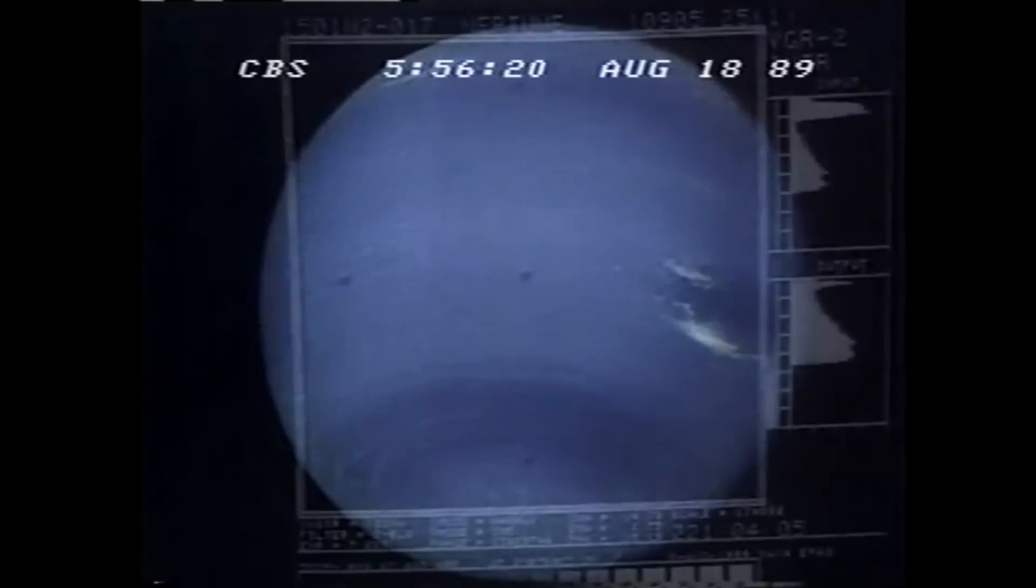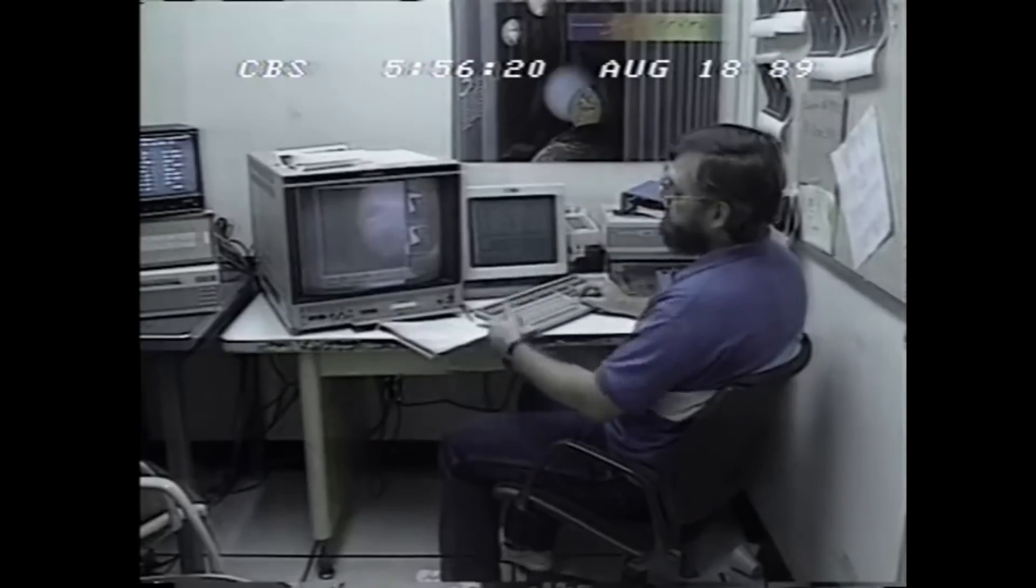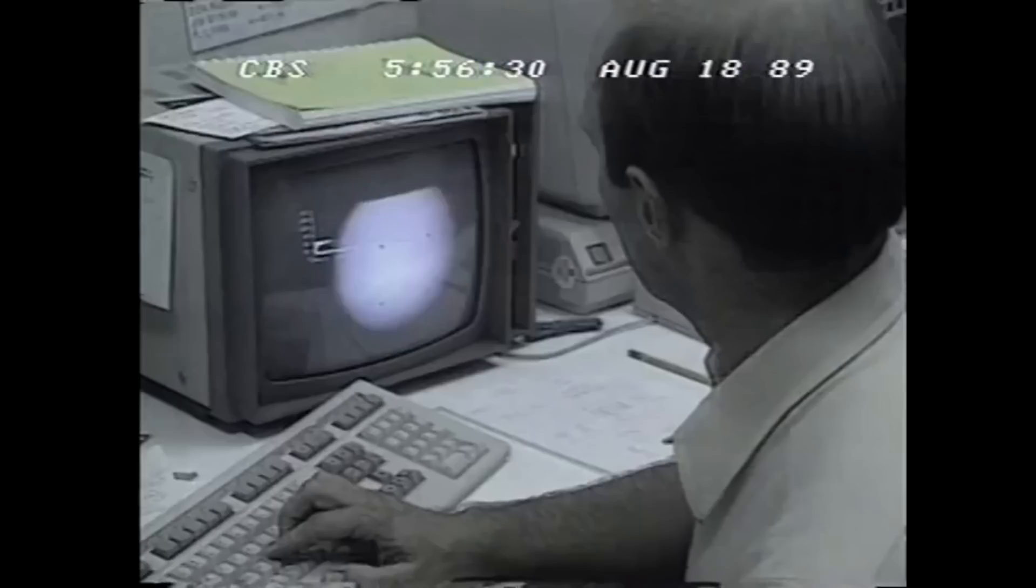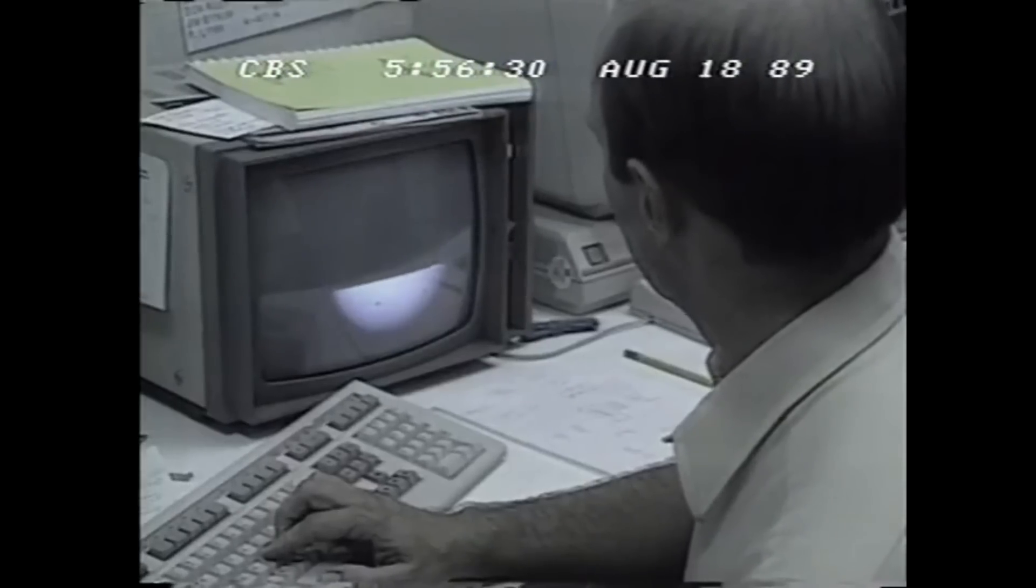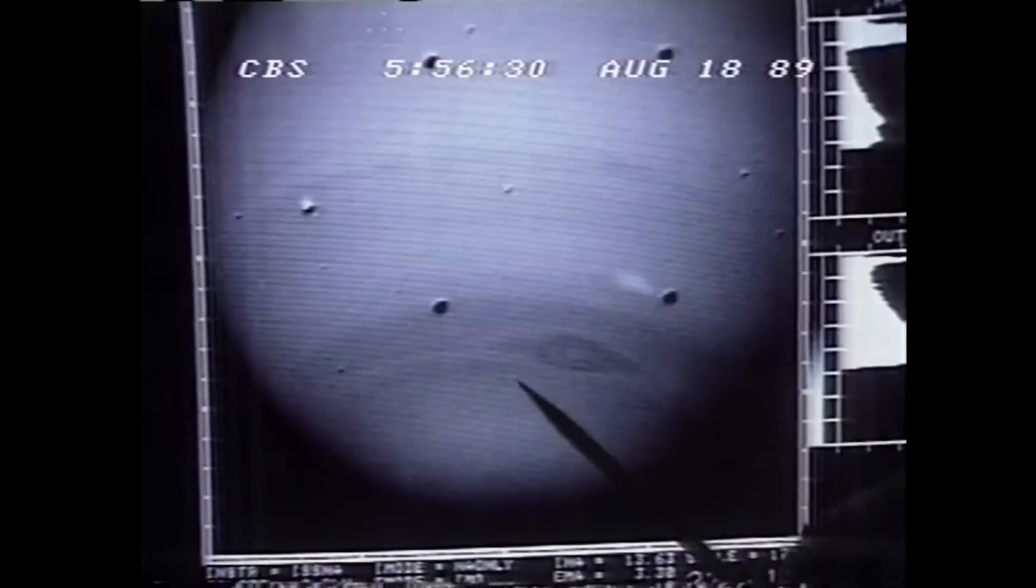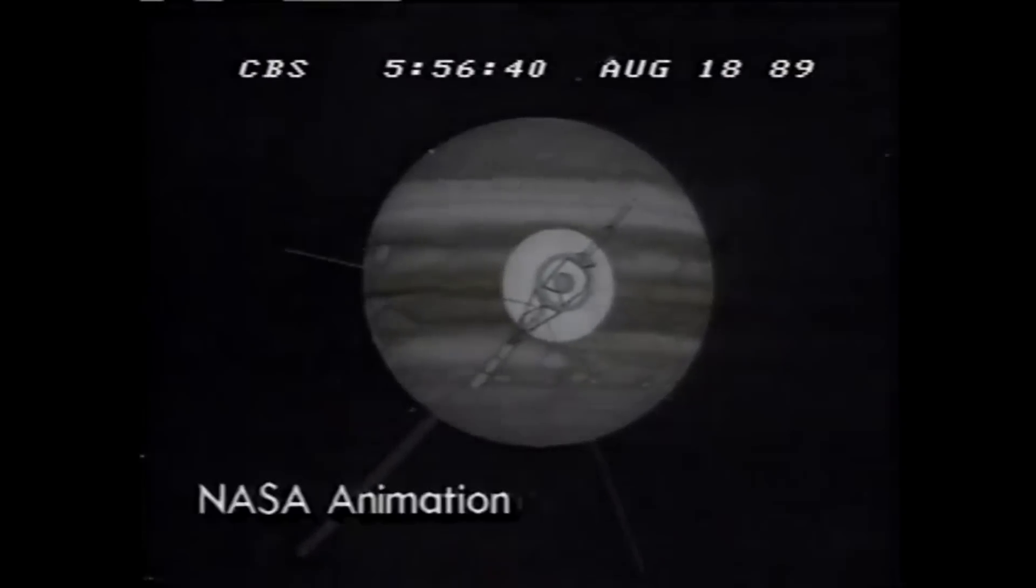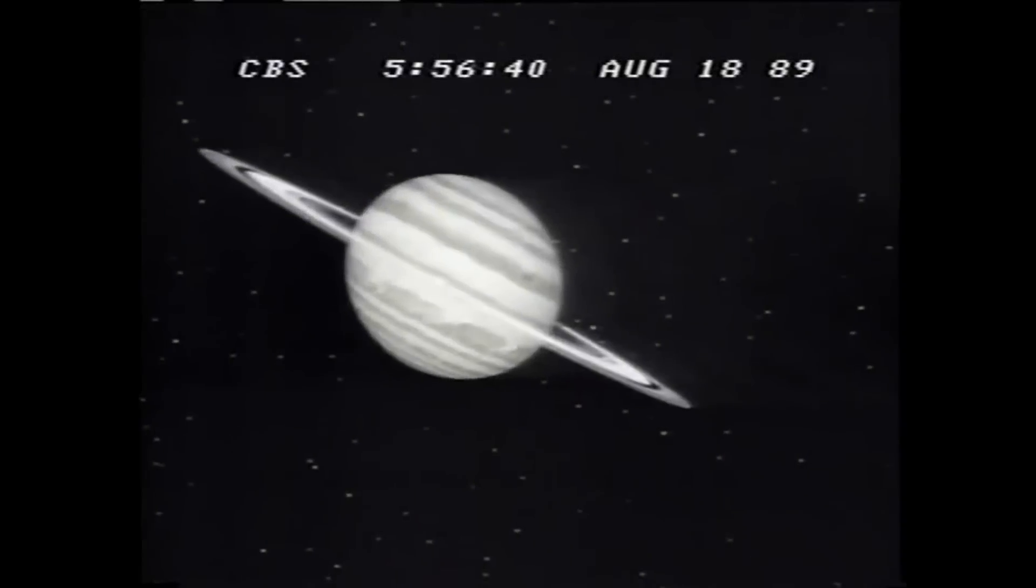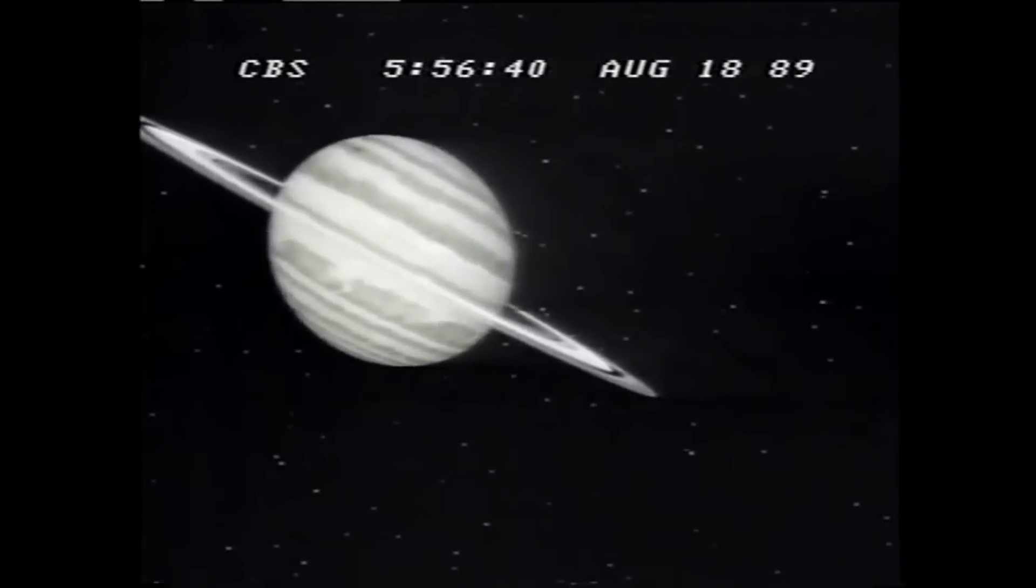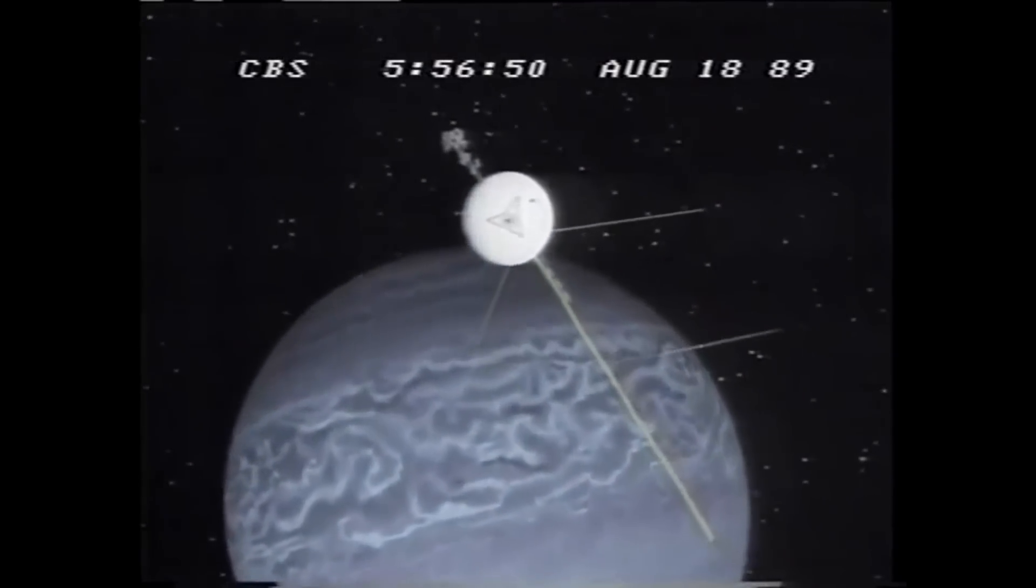Voyager 2's final destination in its grand tour was Neptune, the outermost planet in our solar system at the time. In August 1989, the spacecraft made its closest approach, capturing remarkable images of the planet's deep blue atmosphere and its most prominent feature, the Great Dark Spot, which turned out to be a massive storm. Voyager 2 also discovered new moons around Neptune and provided valuable data on its magnetic field and ring system.